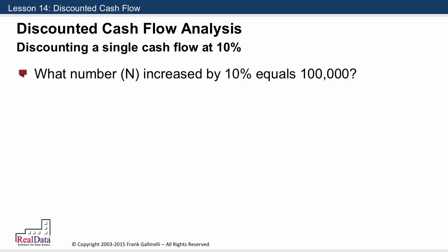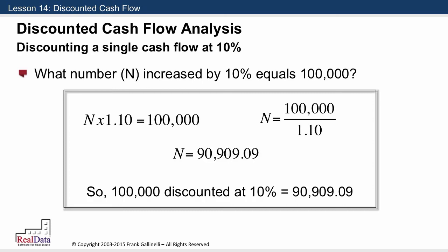So when we increase something by 10%, we're really saying we're going to multiply it by itself plus .10. So we're going to say, what number times 1.10 equals 100,000? Instead of multiplying when we move it, we divide. So now our formula looks like this: what number equals 100,000 divided by 1.10? And the answer is 90,909.09.